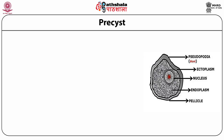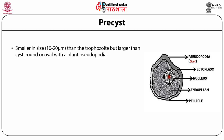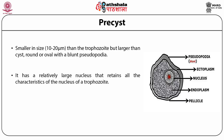Between the trophozoite and the cyst is a transient stage known as the precyst. The precyst is smaller in size — 10 to 20 µm — smaller than the trophozoite but larger than the cyst. It is round or oval with blunt, retracted pseudopodia. It has a relatively large nucleus retaining all the characteristics of the trophozoite nucleus. The trophozoite extrudes food vacuoles before encystment so that the endoplasm is free from red blood cells and other ingested food particles.